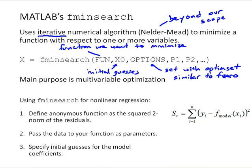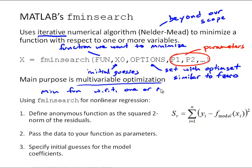We have a parameters list. We can pass parameters through fminsearch using that varargin approach we've used in our own user-defined functions. The main purpose of fminsearch is for multivariable optimization to minimize the function with respect to one or more variables, and it does that numerically.